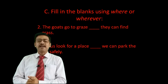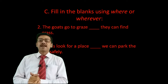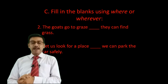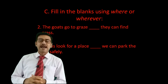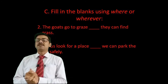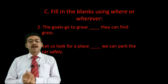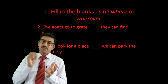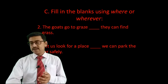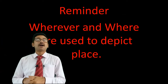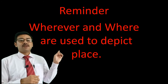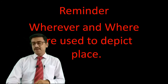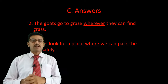Sentence number two: 'The goats go to graze ___ they can find grass.' Try to guess the answer and keep it in mind. Sentence number five: 'Let us look for a place ___ we can park the car safely.' Here we must fill in a subordinating conjunction — either 'where' or 'wherever.' A quick reminder: 'where' and 'wherever' depict place.